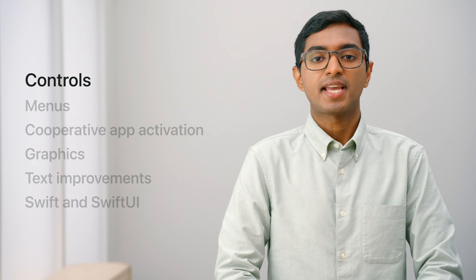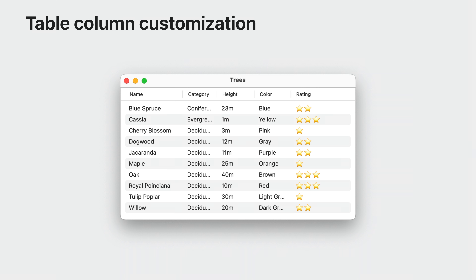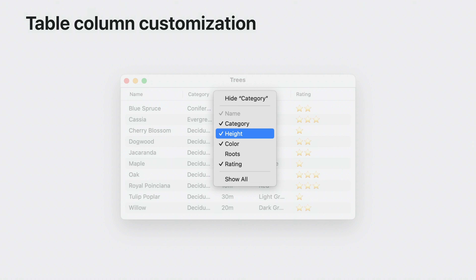macOS Sonoma includes some exciting new features and API refinements to AppKit controls. NSTableView and NSOutlineView provide a lot of functionality out of the box, making them critical elements in designing great Mac apps using AppKit. In macOS Sonoma, there is new API to present column customization menus. The menu allows users to toggle visibility of columns in your table. Previously, this would have required a custom implementation, but now you can add this in as little as three lines of code.